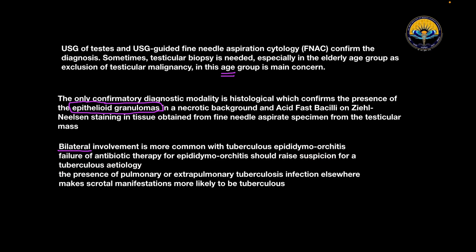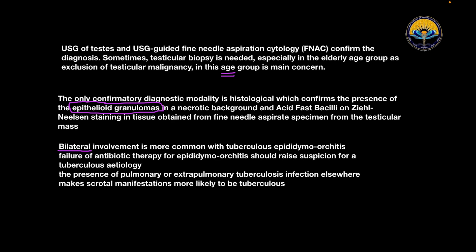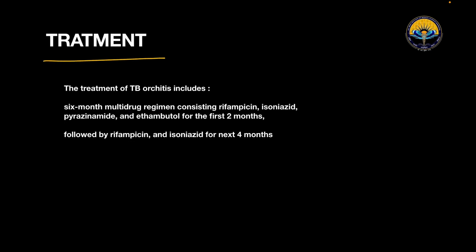The presence of pulmonary or extrapulmonary tuberculosis elsewhere makes testicular findings more likely to be tuberculosis. As this patient has a miliary tuberculosis picture, the testicular findings are more likely to be TB etiology. The treatment of TB orchitis includes a 6-month multidrug regimen consisting of rifampicin, isoniazid, pyrazinamide, and ethambutol for the first 2 months, followed by rifampicin and isoniazid for the next 4 months.